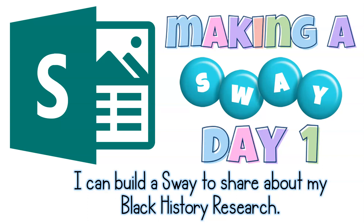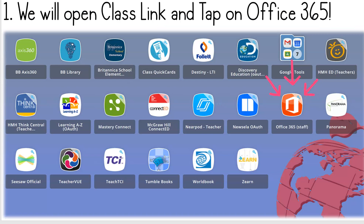If you're with me, let's do step one. We're going to open ClassLink and tap on Office 365. You can see big pointy arrows pointing to the icon that says Office 365. It's orange and it's got a box. Look for that now. If you're struggling, you need to pause this video and don't hit play until you've opened Office 365.